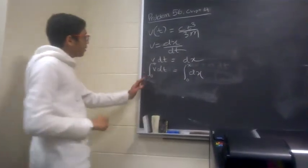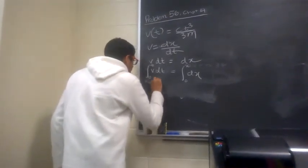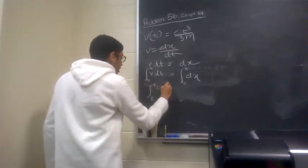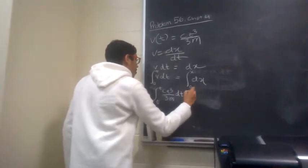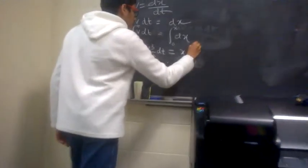Now, for integral v dt, you plug in the value for v of t that you got over here, which is ct cubed over 3m dt is equal to, integral dx will just be x, evaluated at 0 and x.